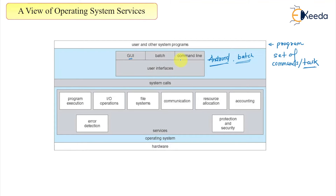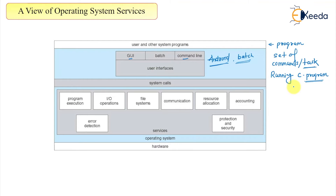The next kind of user interface can be a command line interface, where directly when you are running a program — even when you are running a C program — you can give some input from the command line while running the program, using argv and argc.